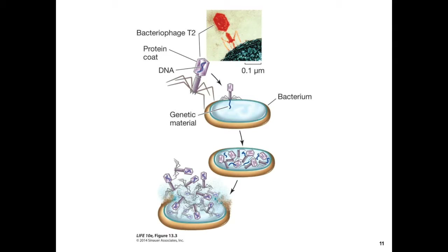When a T2 bacteriophage sits on a bacterium, it injects its genetic material into that bacterium. The genetic material is incorporated with the bacterial DNA. The bacterium thinks the injected genetic material is its own, transcribes and translates it into more copies of the T2 bacteriophage. The bacterium then explodes, those viruses escape, and go on to infect more bacteria — this cycle is called the lytic cycle.